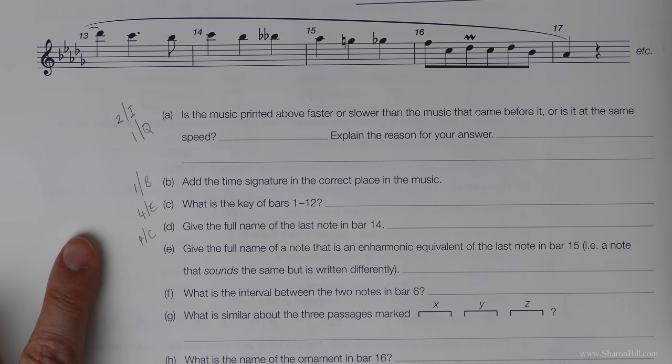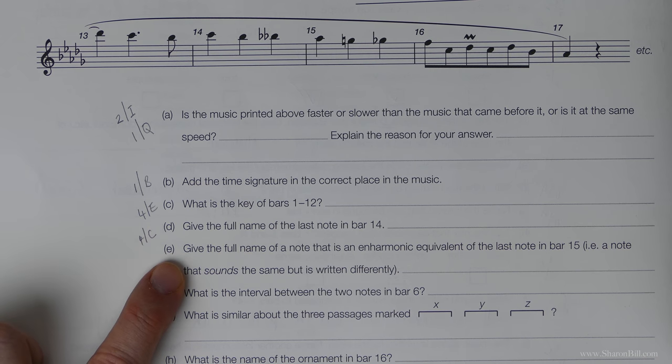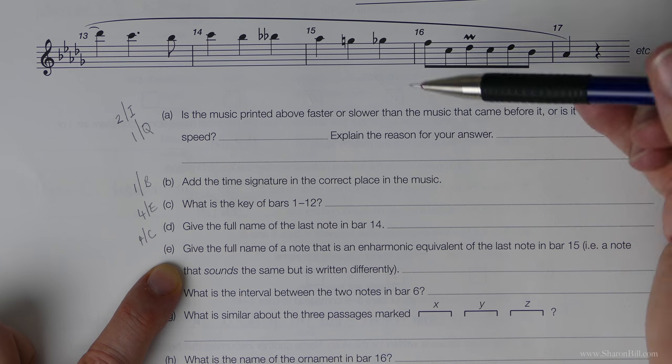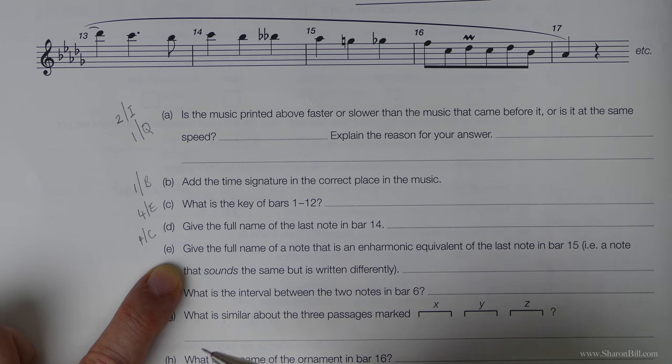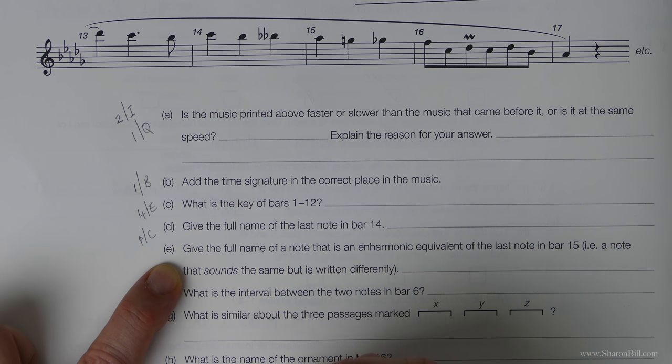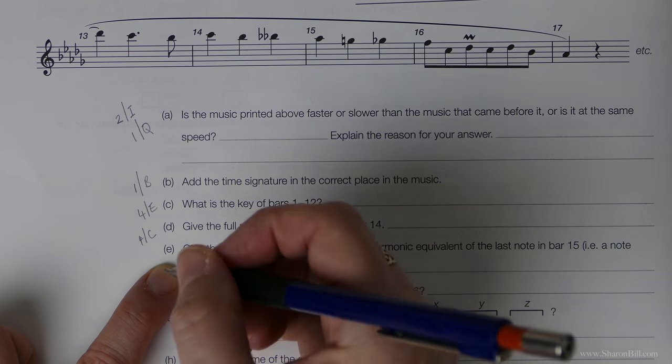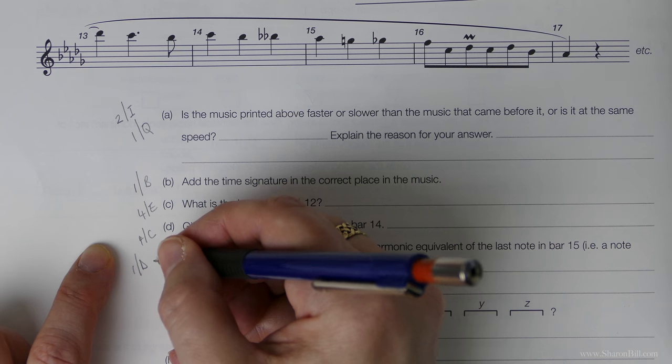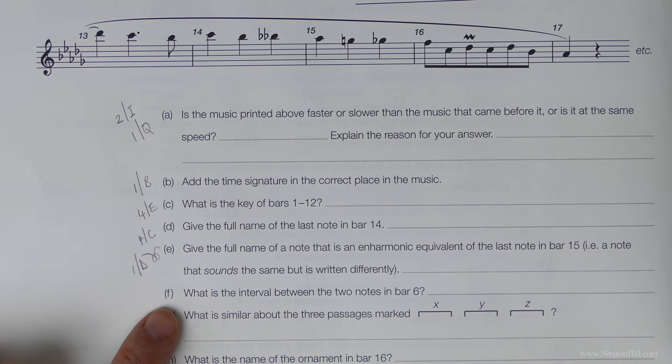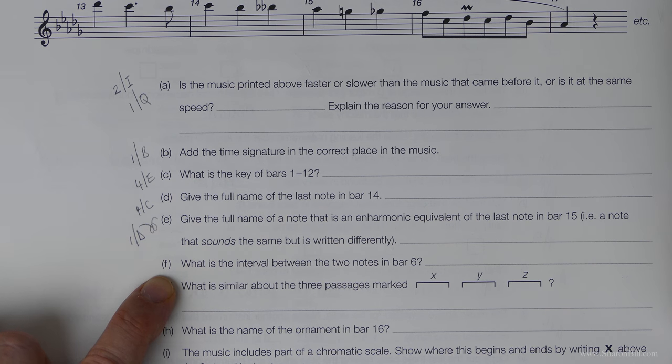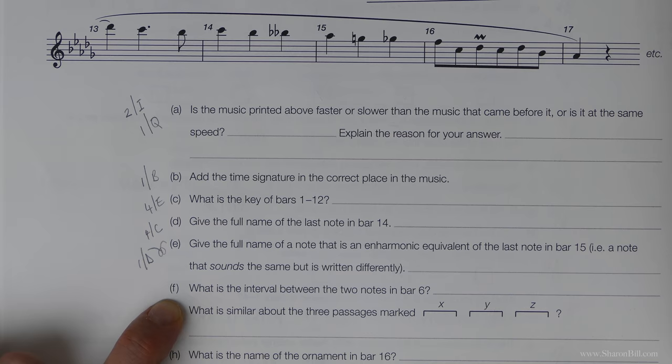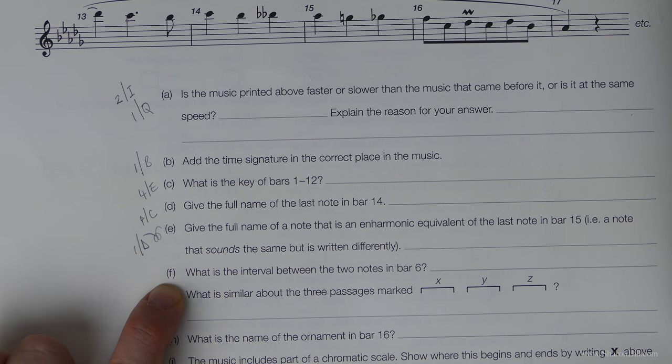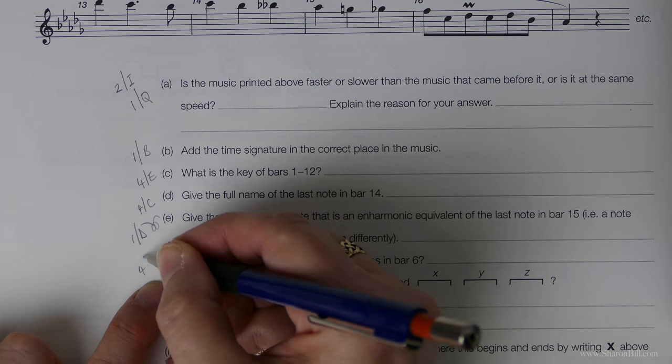So moving on. Give the full name of a note that is the enharmonic equivalent of the last note in bar 15. So we're looking at an enharmonic equivalent to this note. So really it's just making sure that you know your clefs. And so we first deal with those clefs in grade one, section D. But I think really it's just a matter of looking carefully and figuring that one out. What is the interval between the two notes in bar six? So we first look at those sorts of intervals in grade four, section H.